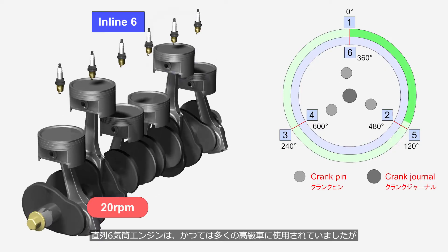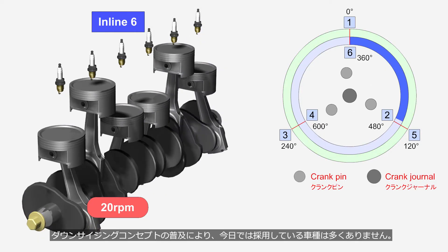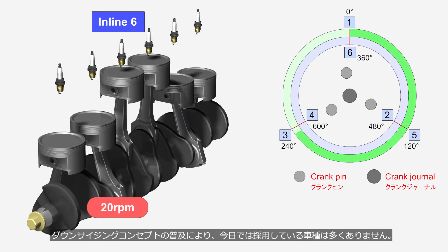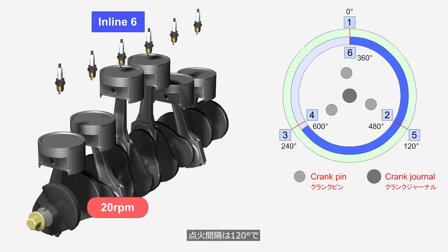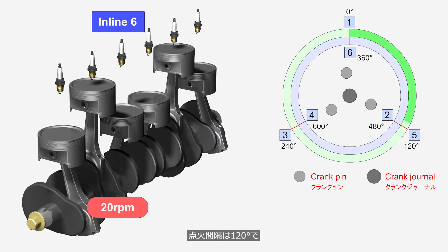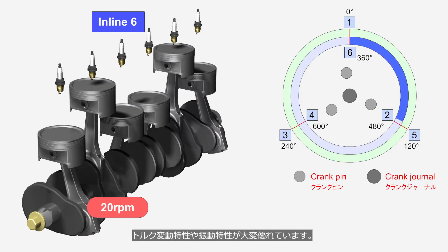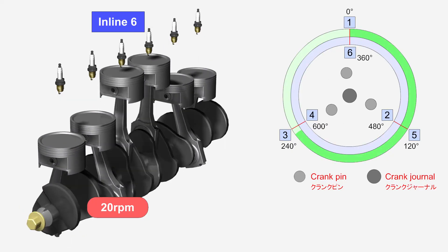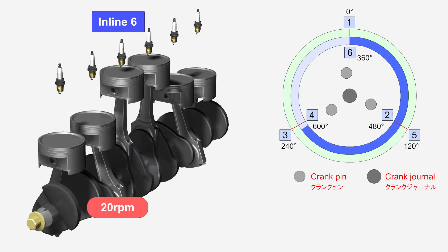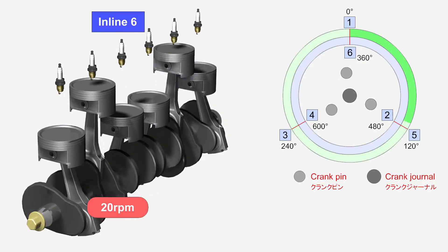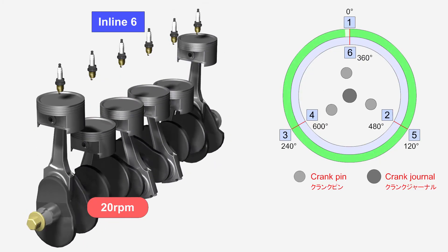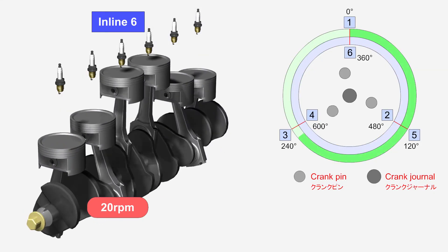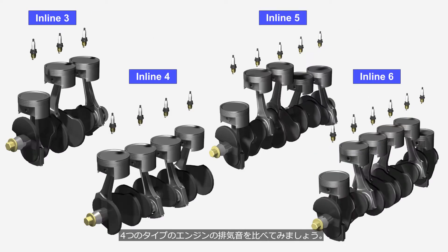Inline 6 engines were once used in many luxury cars, but due to the widespread adoption of downsizing concepts, there are not many vehicle models using them today. The firing interval is evenly at 120 degrees, resulting in excellent torque fluctuation and vibration characteristics. Compare the exhaust sounds of the four types of engines.